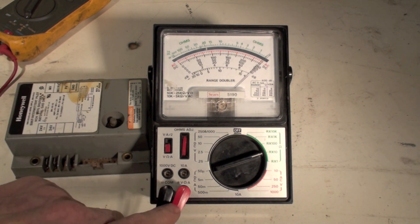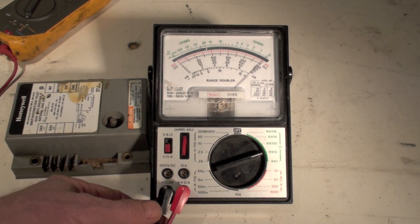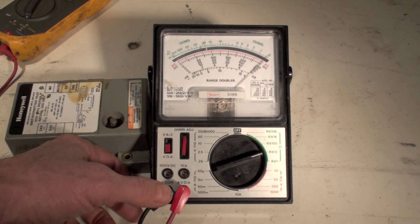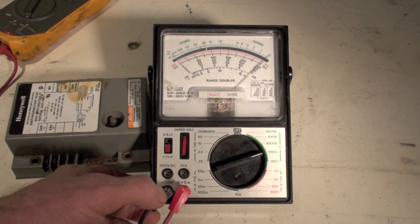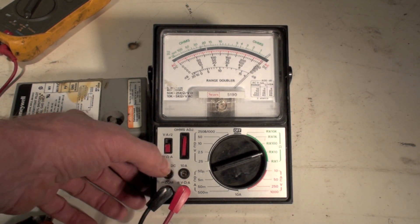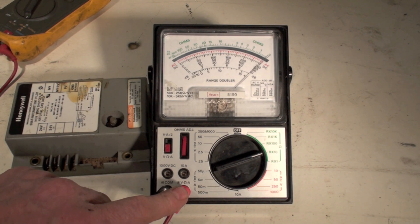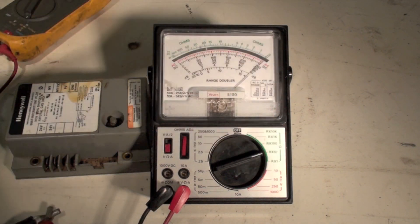We have different places to put these leads. Right now I've got black in common. Black is usually put in common. And then I've got my volts, ohms, and amps right there, which means I'm going to go here, here, or here.